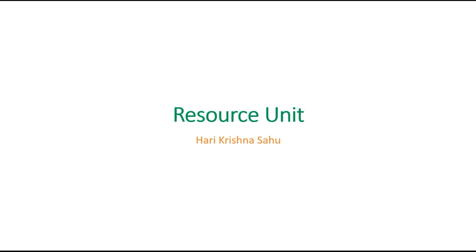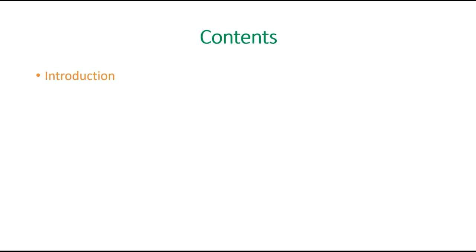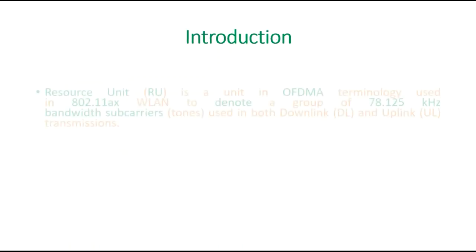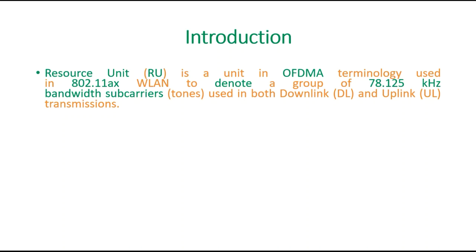Good morning guys. Today we are going to discuss regarding resource unit, or in short, RU. The contents are: first, the introduction part, then technical aspects of RU, what are the subcarrier types, then subcarriers, the RU locations, etc. So first of all, we will look into what is RU. This RU is nothing but resource unit. It is a unit in OFDMA technology, which is basically used in 802.11ax. As per the new naming convention, we call it Wi-Fi 6 as well.